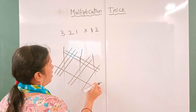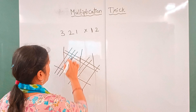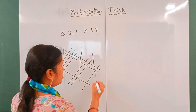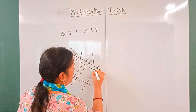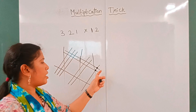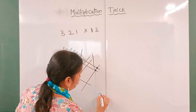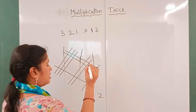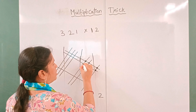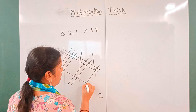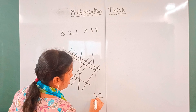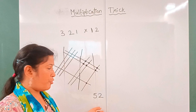Now we divide into parts: 1, 2, 3, 4 parts. At the intersected points — here any intersected are 2. Next section: intersected points are 1, 2, 3, 4, 5. So the units place is 2 and the tens place is 5.